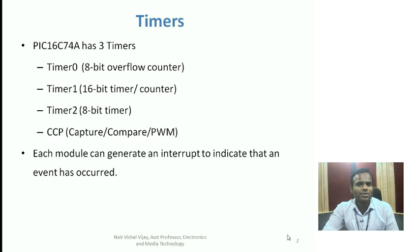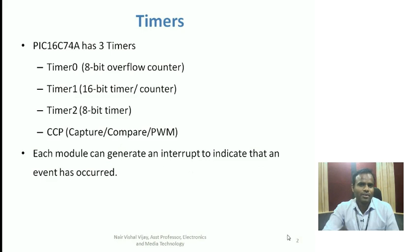Not all microcontrollers will have all three timers — some may have just one or two timers, and some may have all three. As far as our scope of syllabus is concerned, PIC16C74A has all three timers: Timer 0, Timer 1, and Timer 2. It also has a capture, compare, and pulse width modulation module called CCP. There are two CCP modules — CCP1 and CCP2. Timer 0 is an 8-bit timer, Timer 1 is a 16-bit timer, and Timer 2 is again an 8-bit timer with the compare feature.